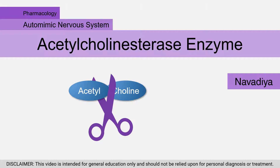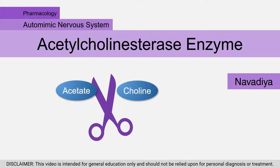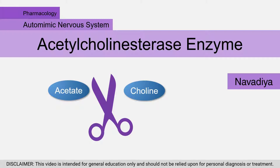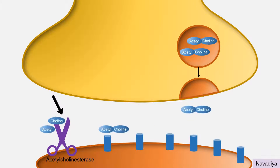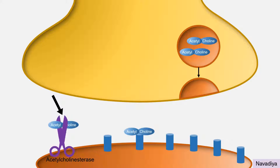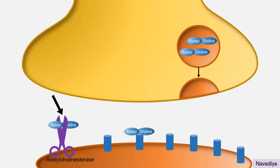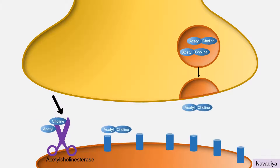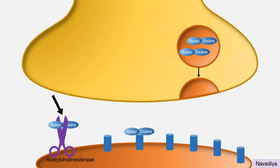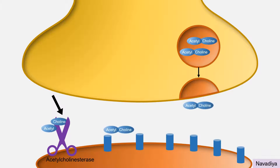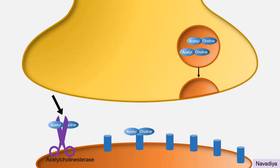In this video we will see acetylcholinesterase enzyme and hydrolysis of acetylcholine. Acetylcholinesterase is present at cholinergic sites, where it degrades acetylcholine molecules released in the synaptic cleft and thereby terminates its action.